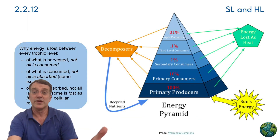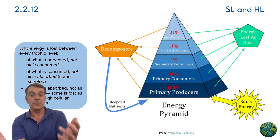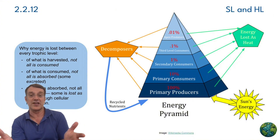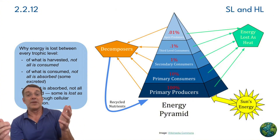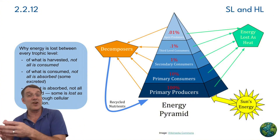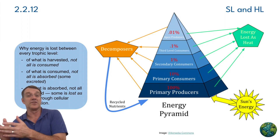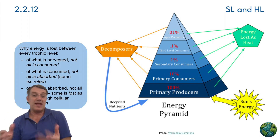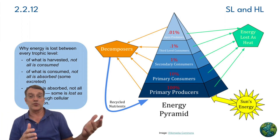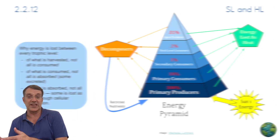However, decomposers play a really important role in energy transformations in food chains because they break down dead organic material and make it available as nutrients in the soil for producers again.